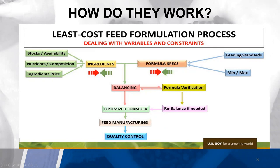Over here on the far right in these blue boxes, you have feeding standards and your minimums and maximums. Those are going to be based on the nutritionist and what his or her formula specs are going to be — your 12% crude protein, 8% crude fat, and so on. These formula specs can change back and forth depending on any adjustments the manufacturer or nutritionist would like to make. This comes down to your balancing — if everything looks fine, it goes as an optimized formula. However, if there are any discrepancies, it will come back to formula verification here on the right in this yellow box.